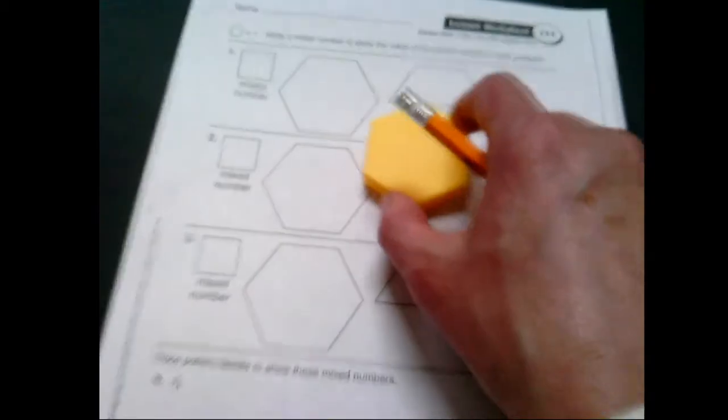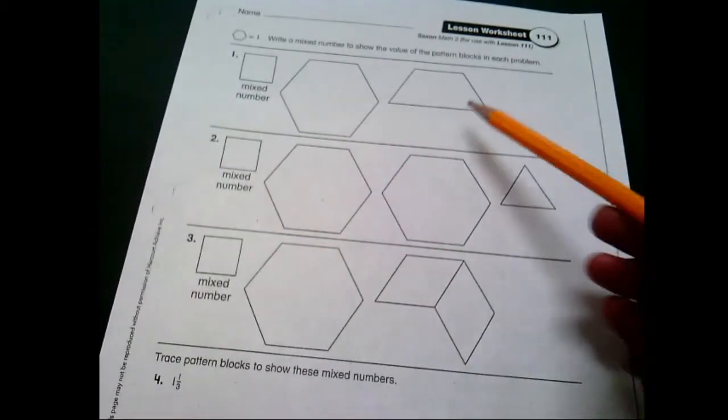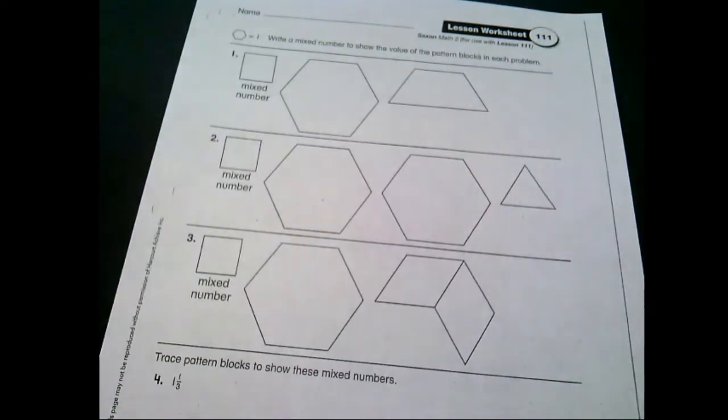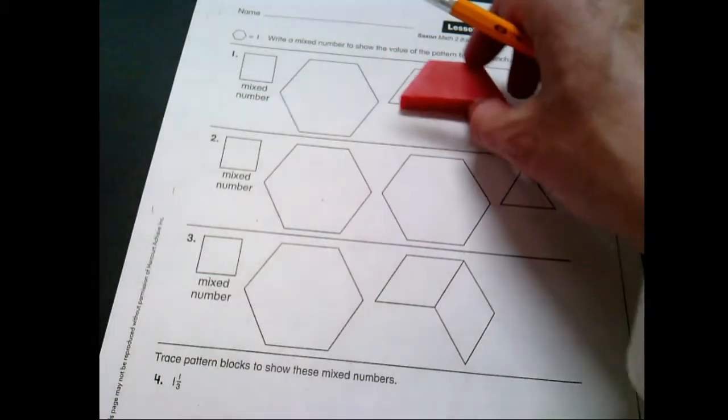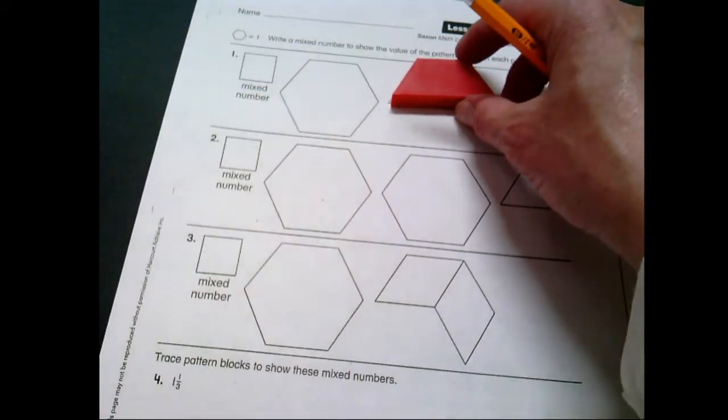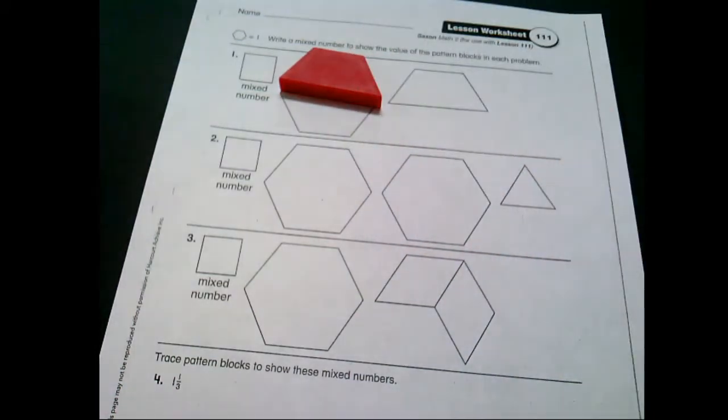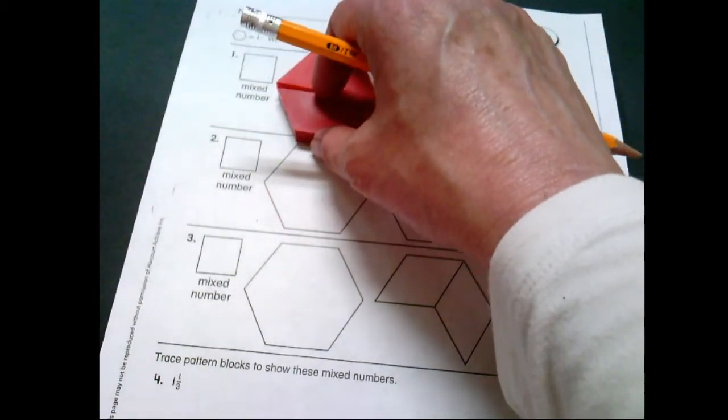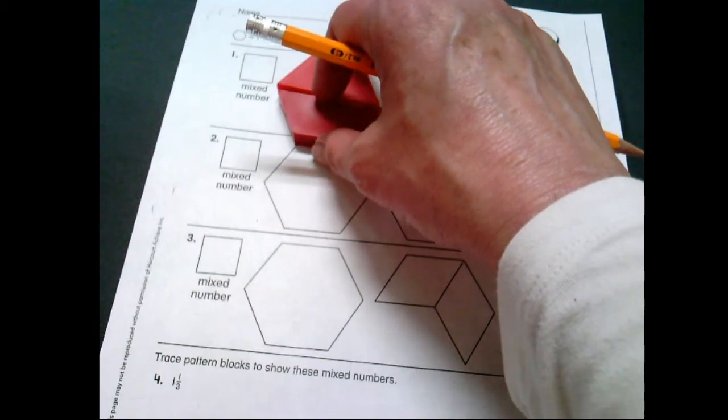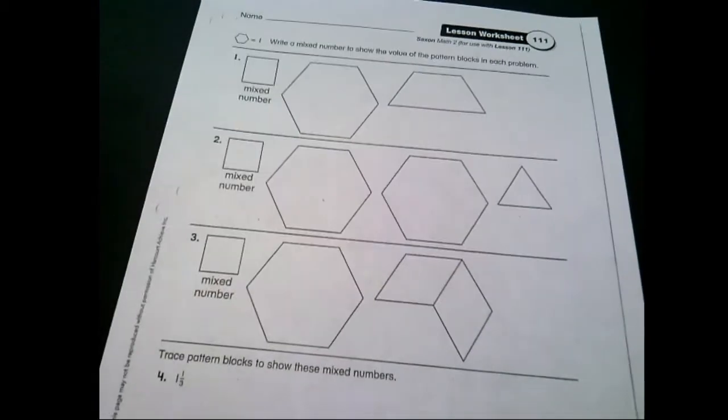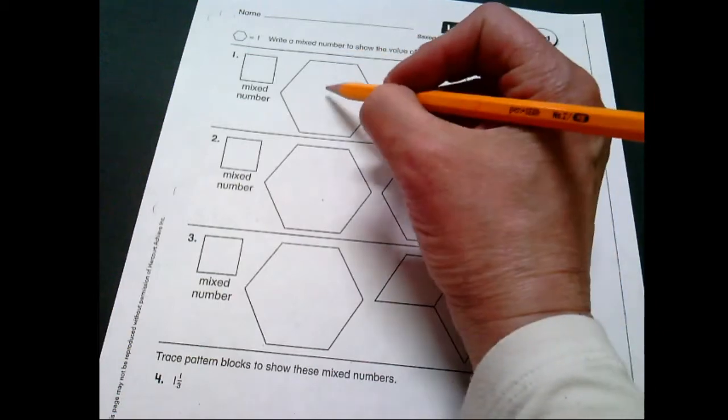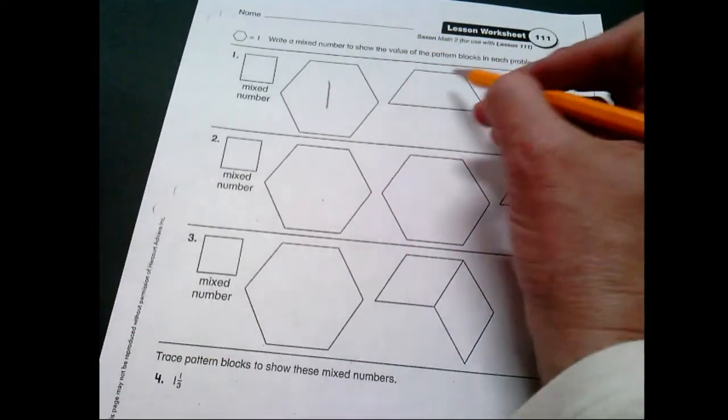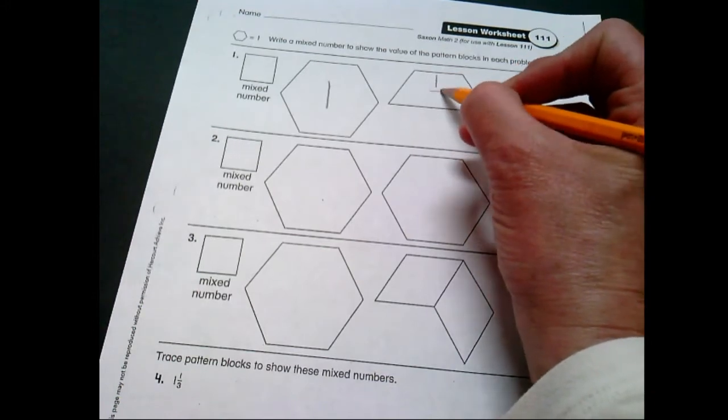All right, well then what's the value of our second shape here? What's the value of our trapezoid? Well, we know from work that we've done before, it takes two of these to fill up that one shape. So two, that means our bottom denominator is going to be a two. That means one half. So how many whole pieces do we have? One and one half.